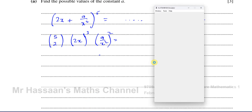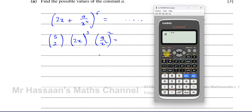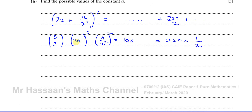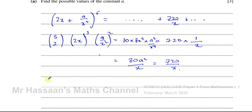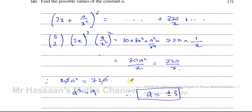So first I put 5C2. Using the NCR button: press 5, then shift, then the division button for C, then 2. 5C2 gives you 10. Times (2x)³ which is 8x³. Times a² over x⁴. Simplifying: 10 times 8 is 80, giving 80a²/x. We know that equals 720/x, so 80a² must equal 720. Therefore a² = 720/80 = 9. So a must be plus or minus 3. That's the answer — using trial and error is an easy way to find the right powers.